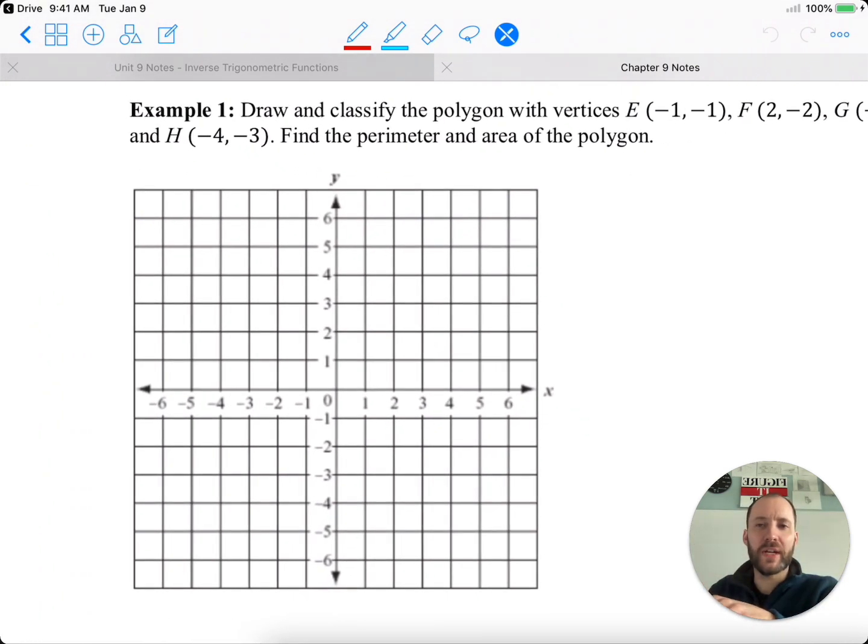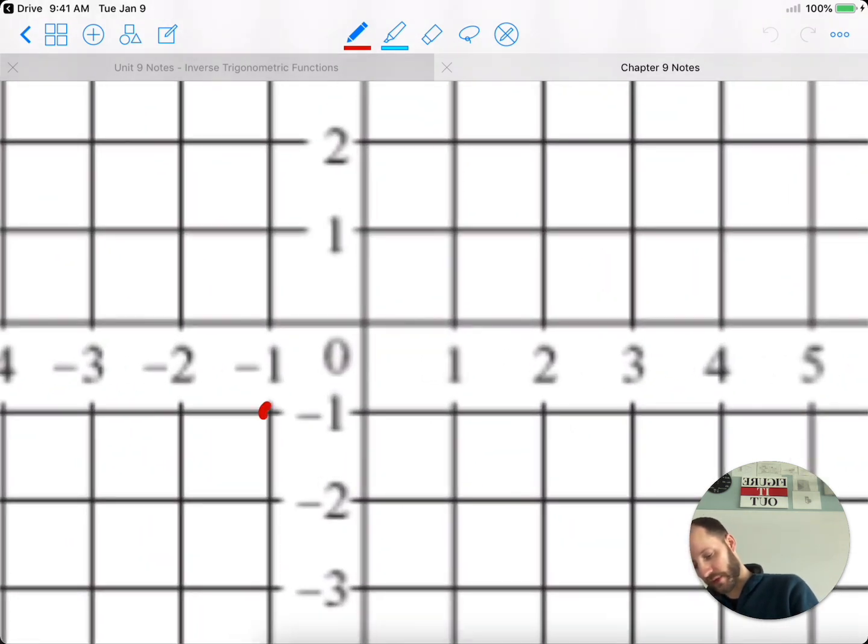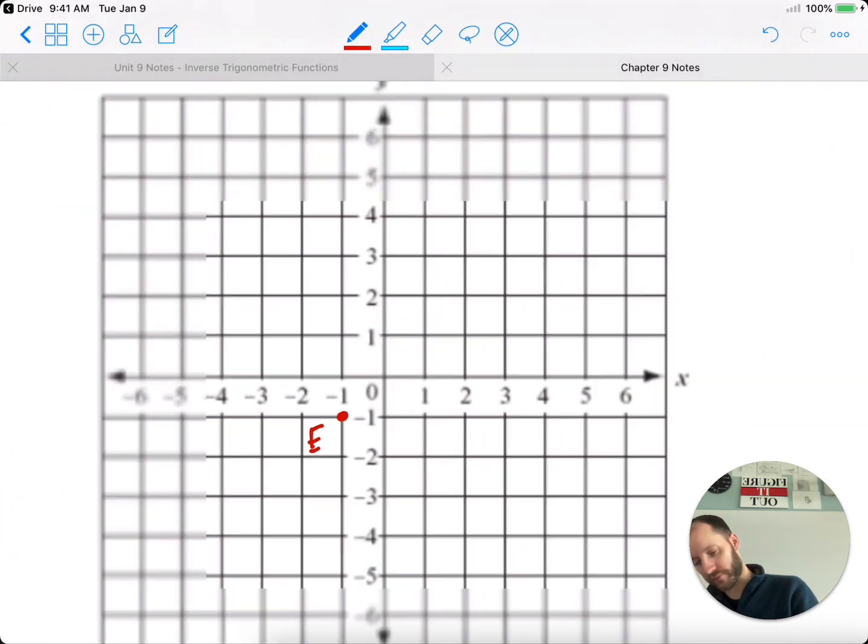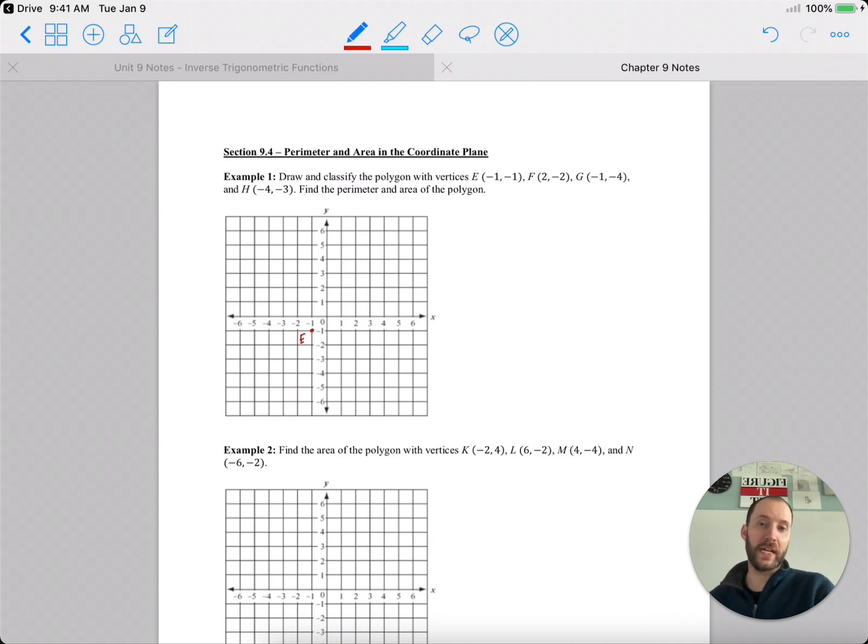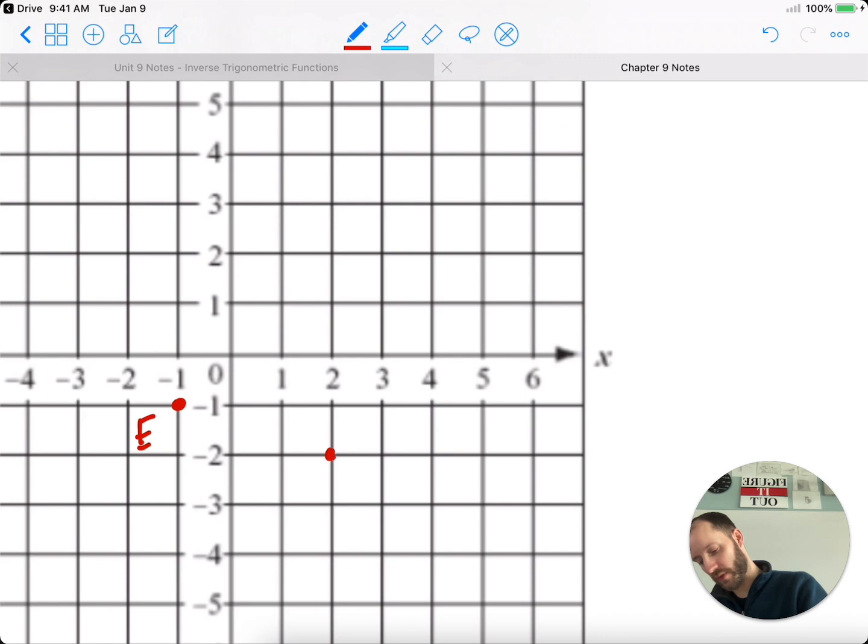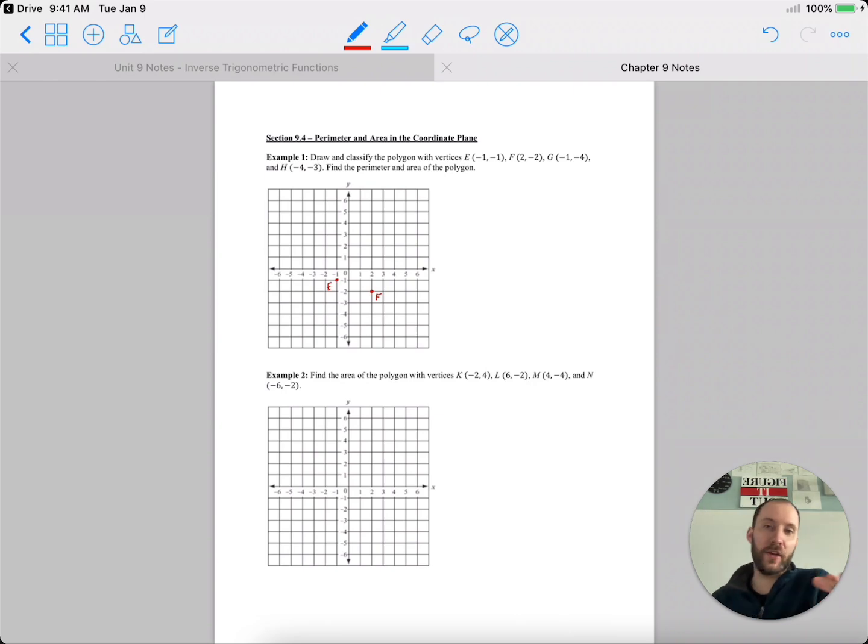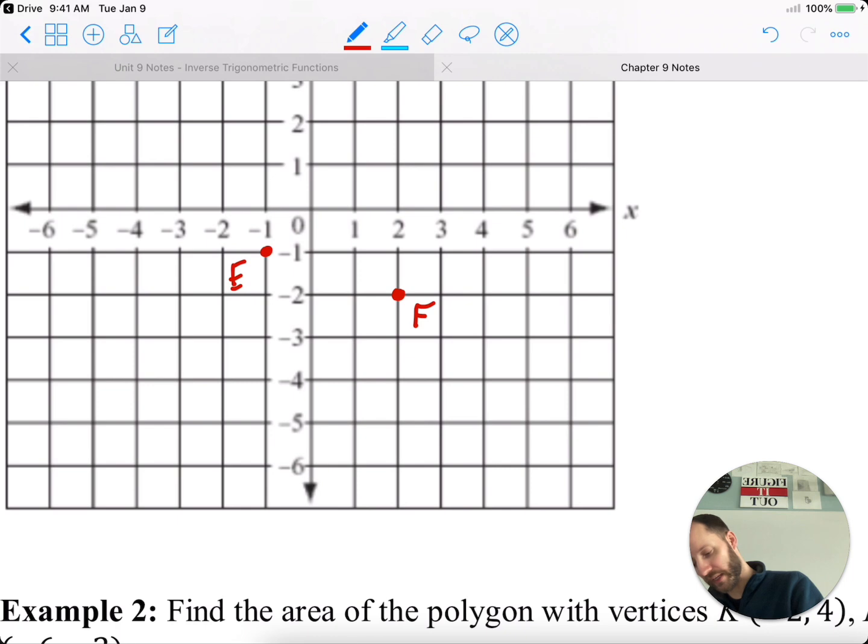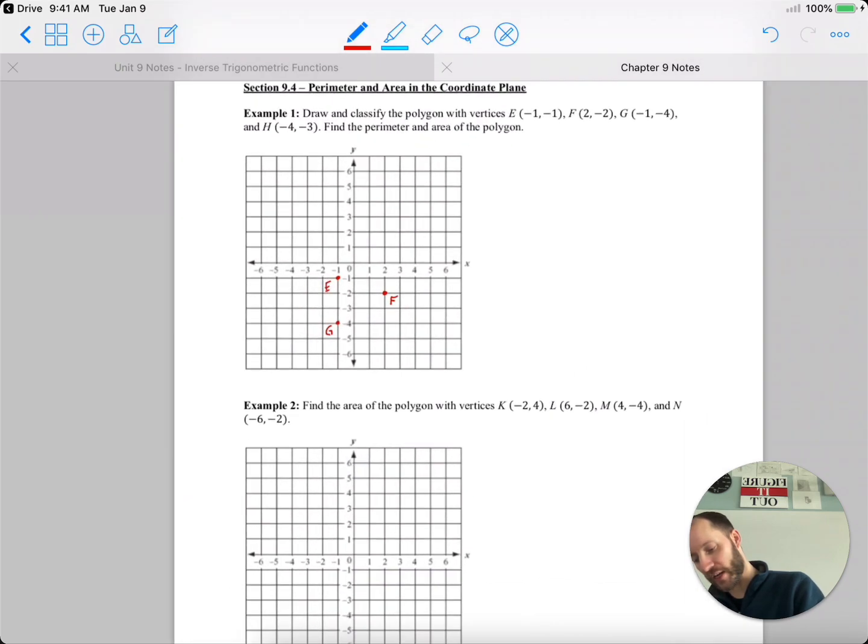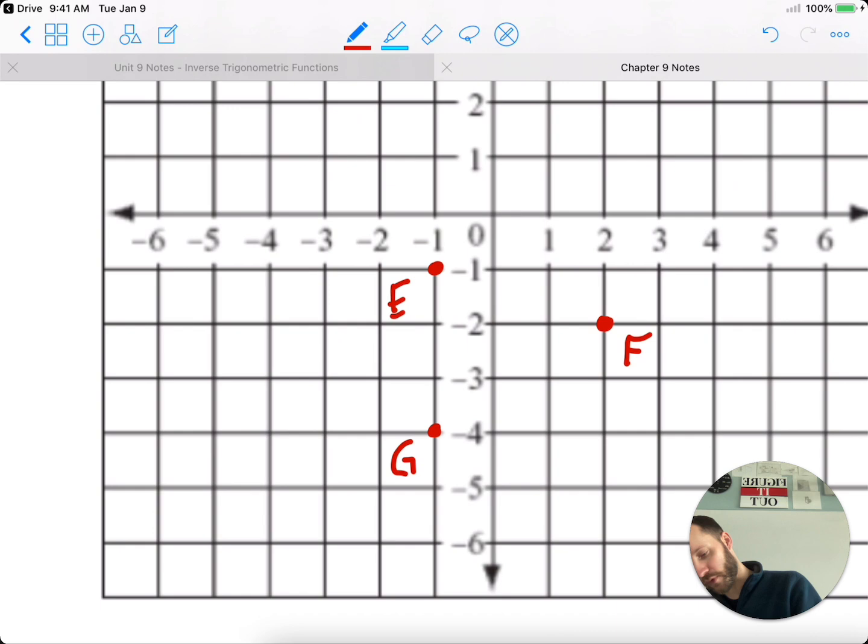Example 1, finding the perimeter and area of the polygon. So we have E at (-1, -1), F at (2, -2), G at (-1, -4), and H at (-4, -3).